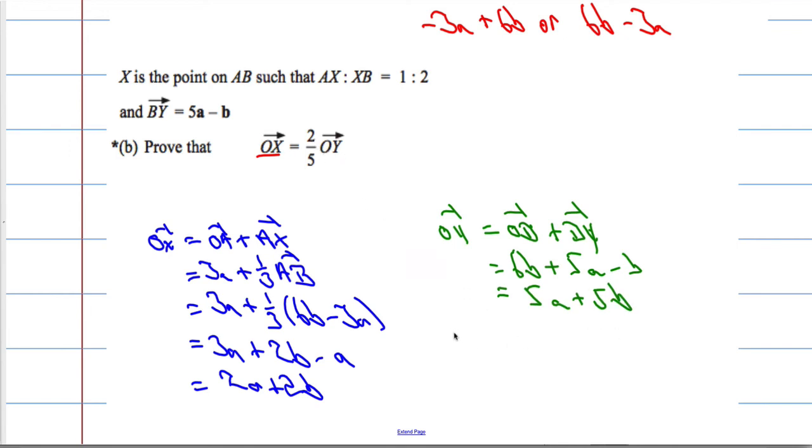Okay, so what is two-fifths of OY? Two-fifths of OY equals 2a plus 2b. So dividing by 5, and then times-ing by 2, 2a plus 2b. And you can see that OX, so that implies that OX, which we worked out earlier on, OX is equal to two-fifths of OY. Hence, we've proven it.